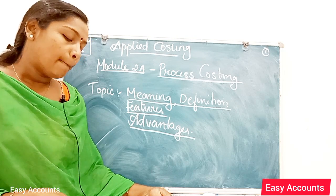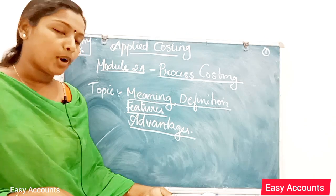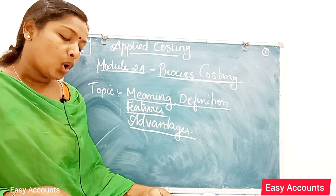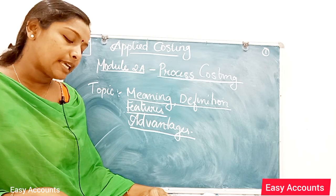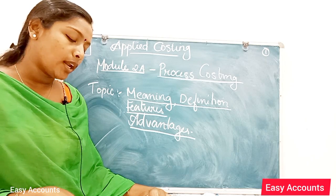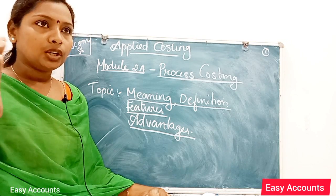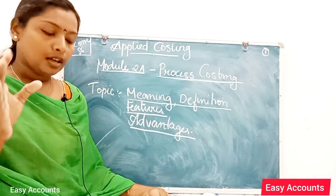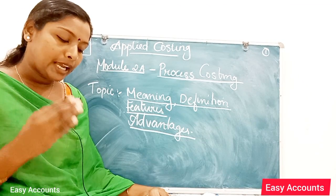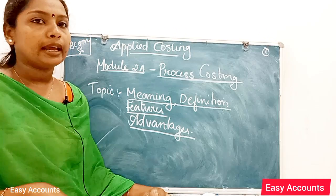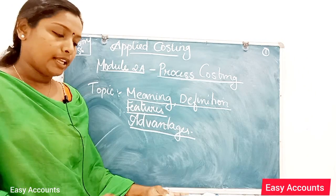The next feature is production of identical products. Only identical products are produced by the same process on a continuous flow. In the continuous flow, the same process produces identical products.